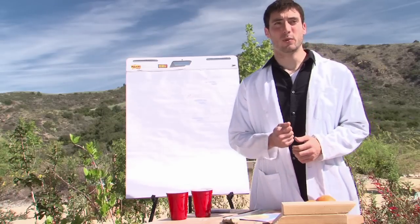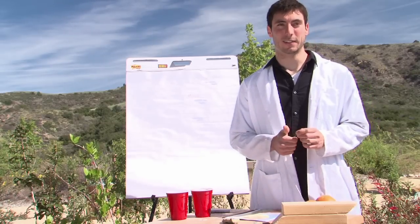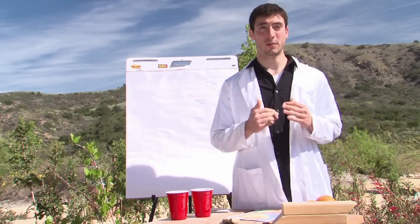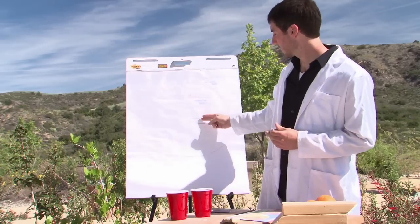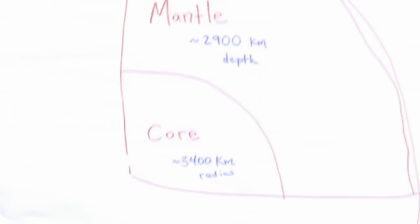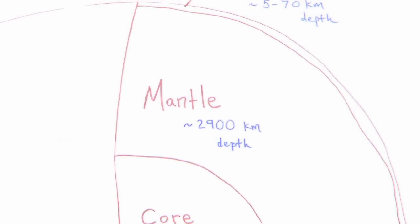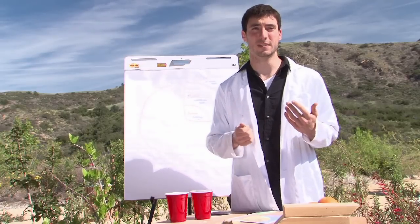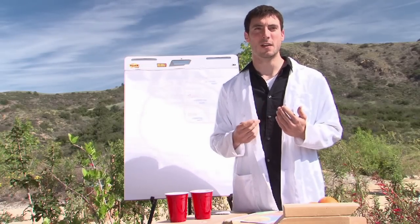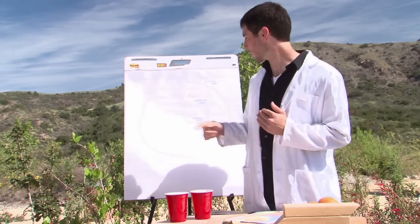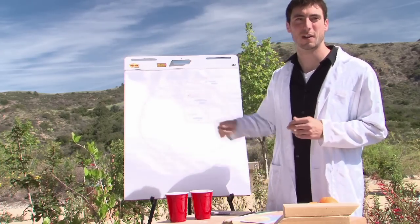The first thing that's really important to know when you're studying plate tectonics is that the earth is made up of different layers. At the center of the earth we have the core, which goes from the center out to about 3,400 kilometers. Beyond that is the mantle. Unlike the core, the mantle isn't all the way solid — it's liquid rock, magma. Some of it behaves kind of like a ductile solid, and it goes about another 2,900 kilometers up.